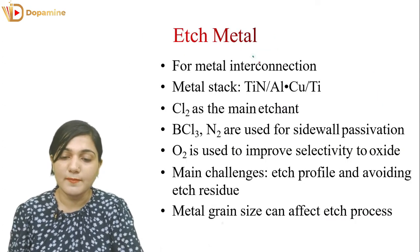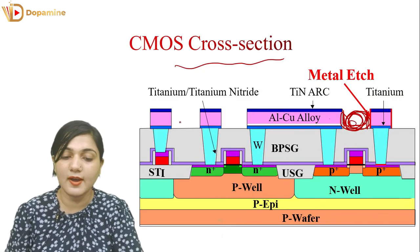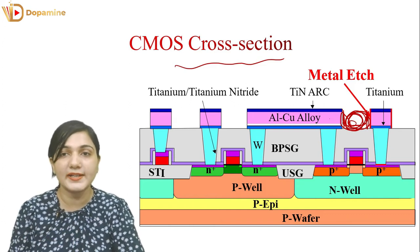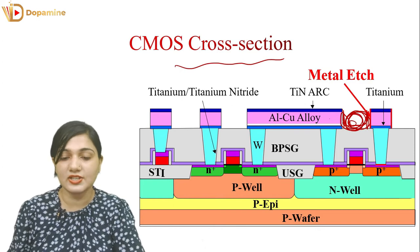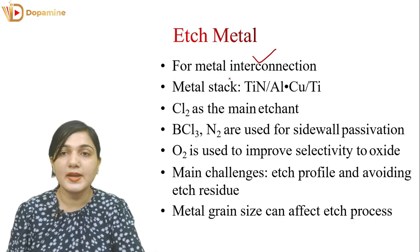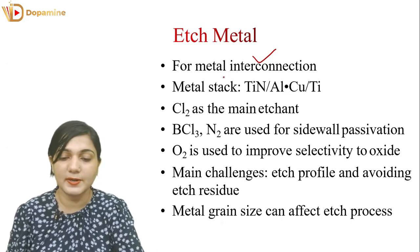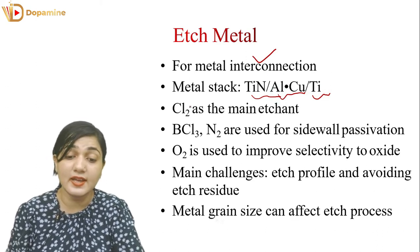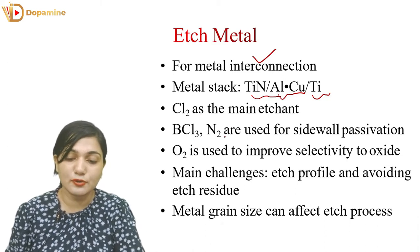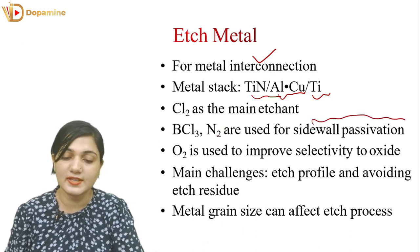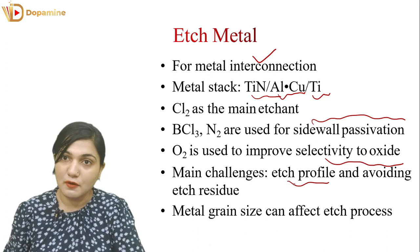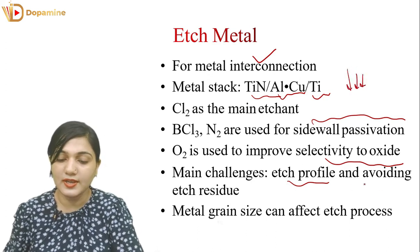For metallic interconnection, we have to create metal connections by etching metal from different places. The metal stack consists of titanium nitride, aluminum-copper alloy, and titanium. For this stack, we use chlorine as the main etchant, and BCl3 and N2 are used for sidewall passivation. O2 is used for oxide selectivity. The challenges include controlling the etch profile, matching the etch direction, and avoiding etch residue related to metal grain size.